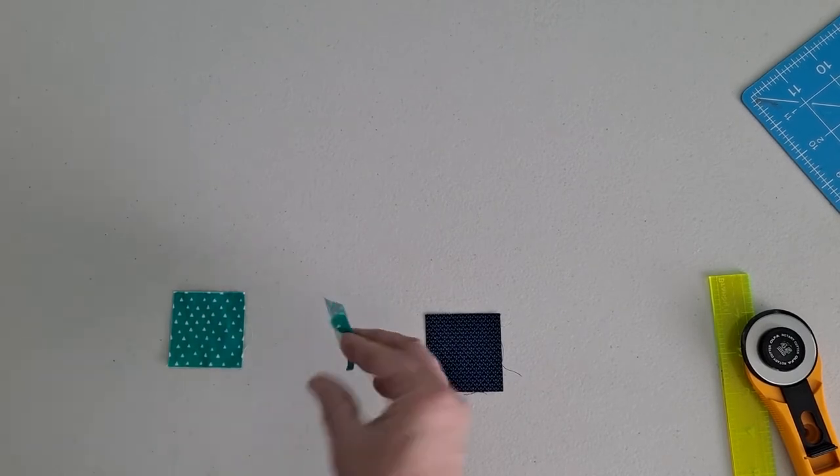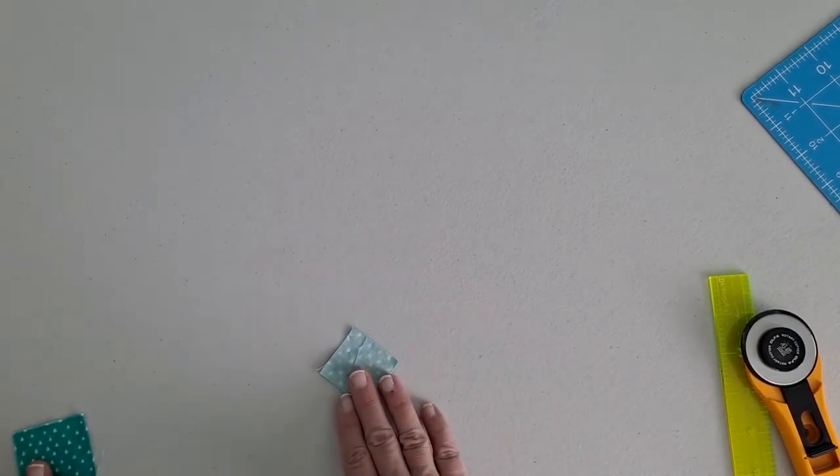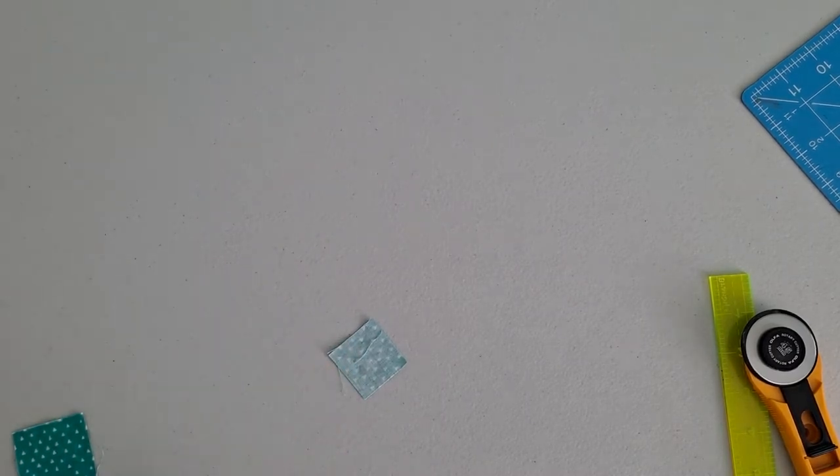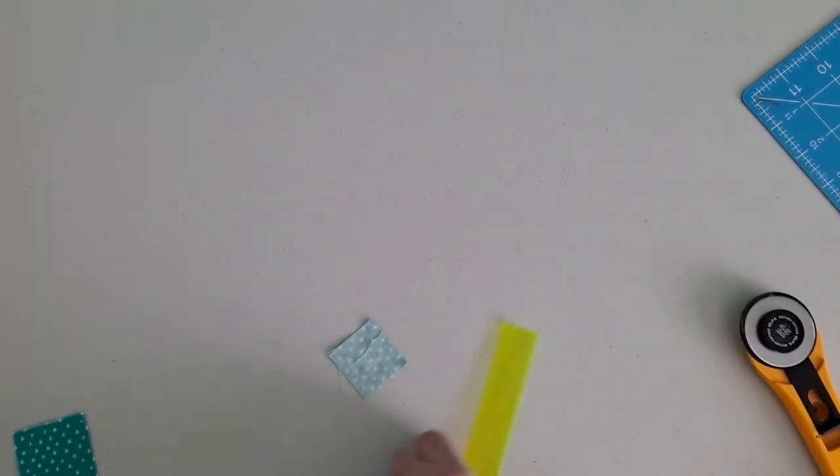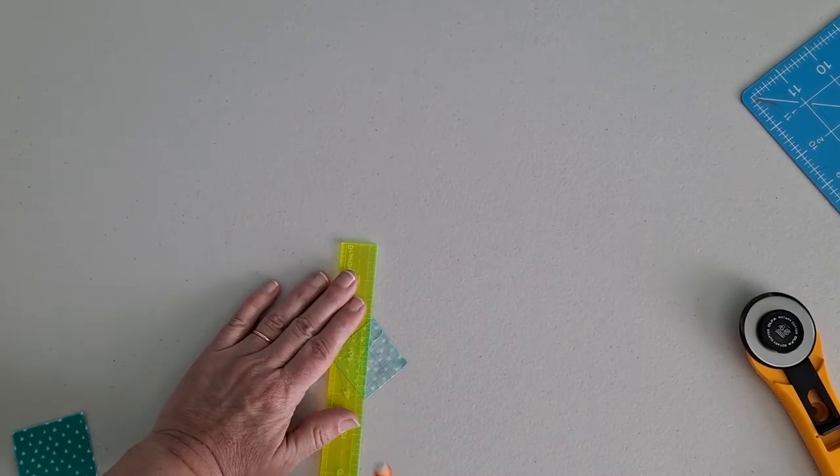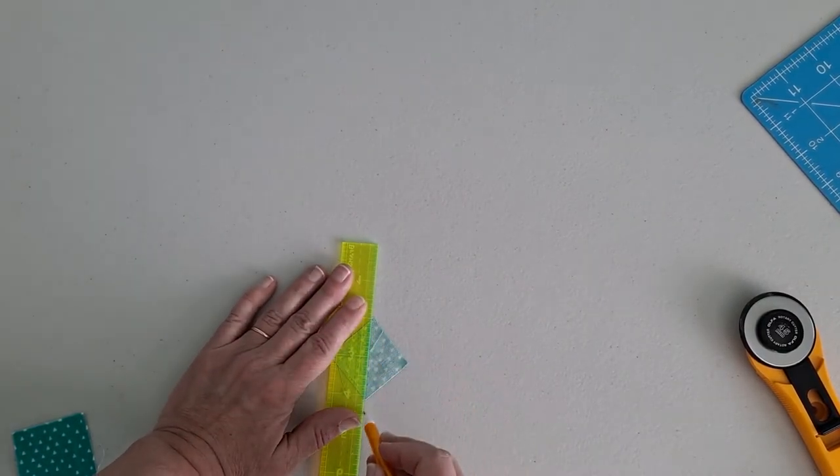On our little one and a half inch, this will make a cute little three inch block. We're going to draw a diagonal line through our square.